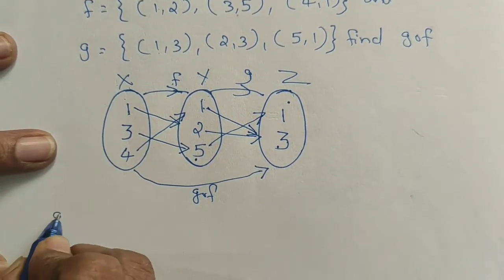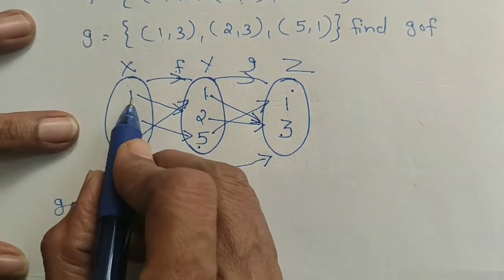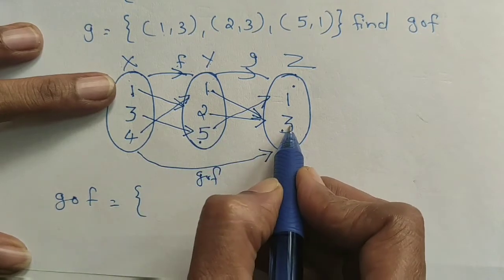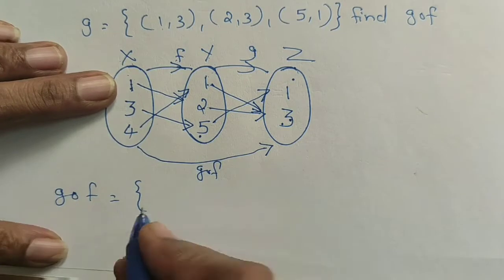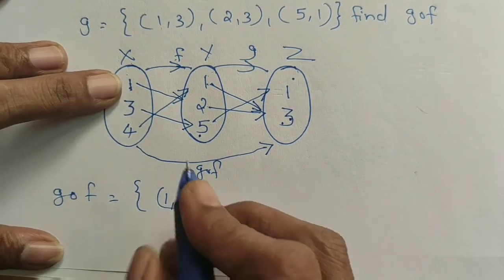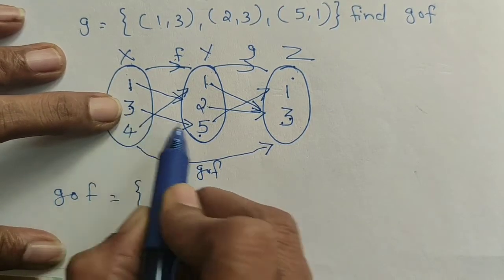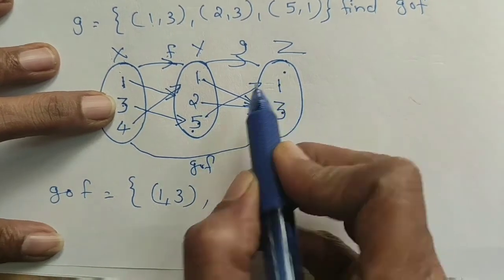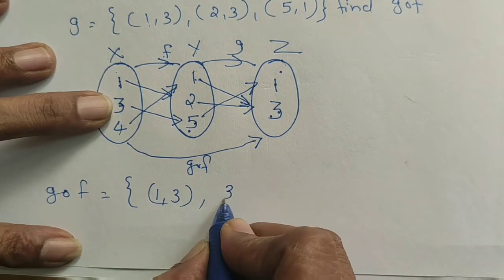Now we compute g composition of f. For x=1: f(1)=2, and g(2)=3, so g∘f(1)=3. For x=3: f(3)=5, and g(5)=1, so g∘f(3)=1. For x=4: f(4)=1, and g(1)=3, so g∘f(4)=3.